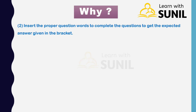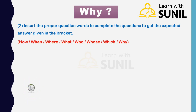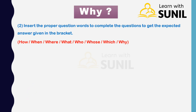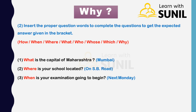Second activity: insert the proper question words to complete the questions to get the expected answer given in brackets. Question words: when, where, what, who, whose, which, why. First: what is the capital of Maharashtra? — Mumbai. Second: where is your school located? — On SB Road. Third: when is your examination going to begin? — Next Monday.